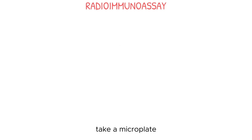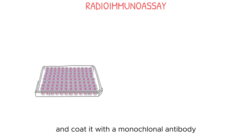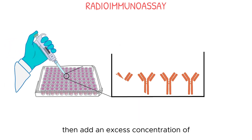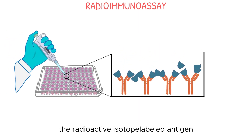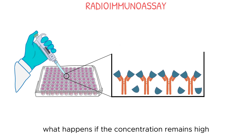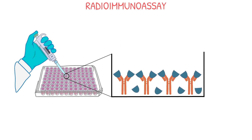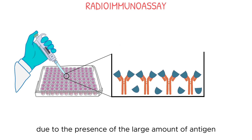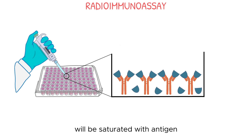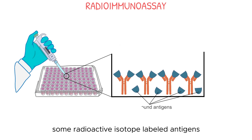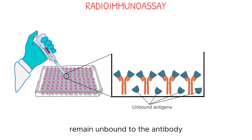In the first step, take a microplate and coat it with a monoclonal antibody. Then add an excess concentration of the radioactive isotope labeled antigen to the well. Due to the large amount of antigen, all the antigen-binding sites of the antibody will be saturated with antigen, leaving no free antibody available. As you can see, some radioactive isotope labeled antigens remain unbound to the antibody.